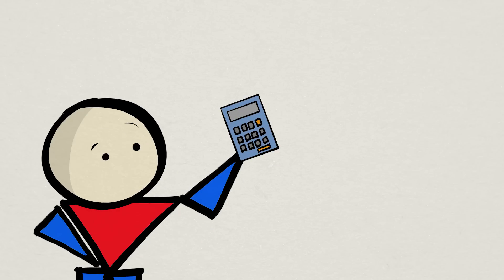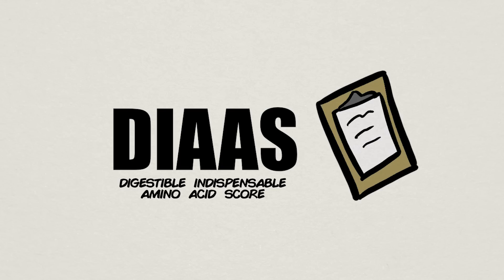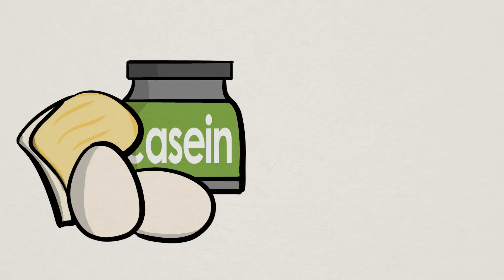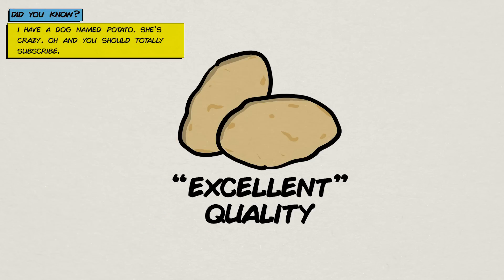And by calculating these factors, experts then score different protein sources through evaluation methods like the DIAAS. When we do look at DIAAS scores, it is without a doubt that animal-based proteins like pork, casein, and eggs score the best, and are considered excellent quality proteins. Interestingly, potatoes are scored excellent quality as well, the only plant to make the list.